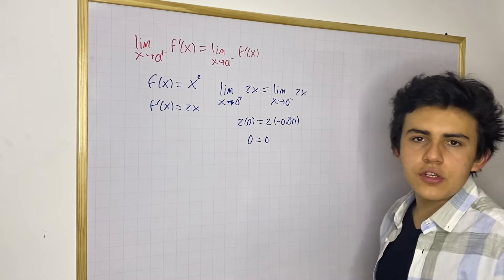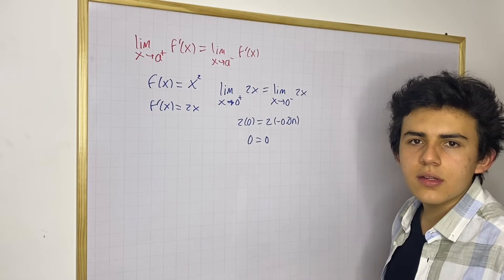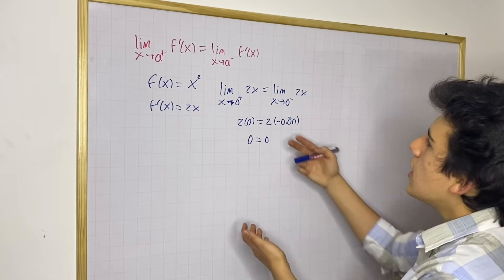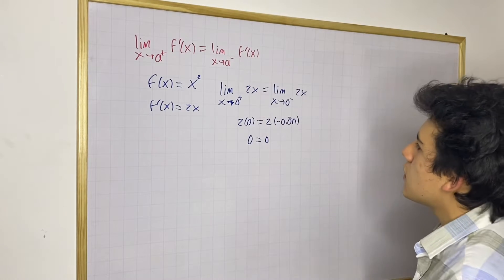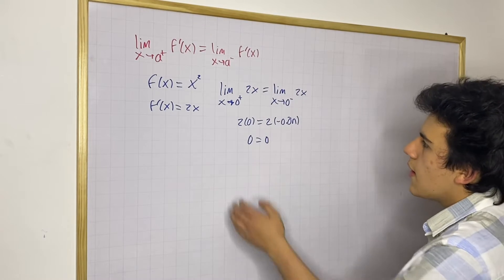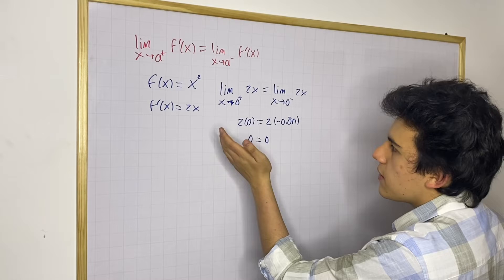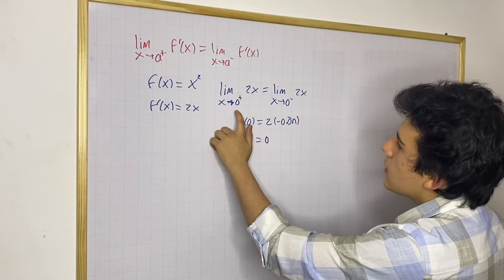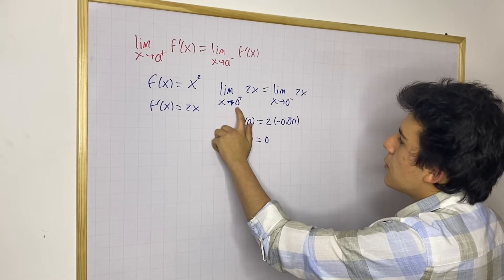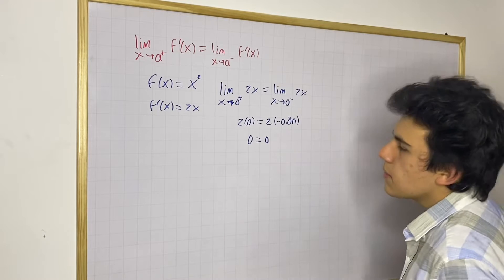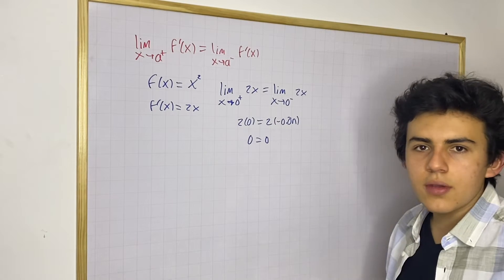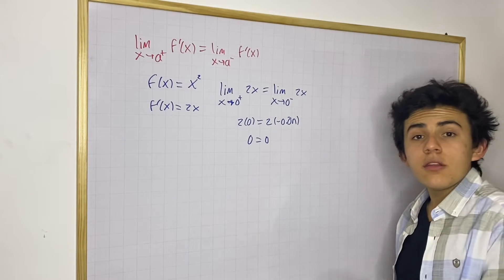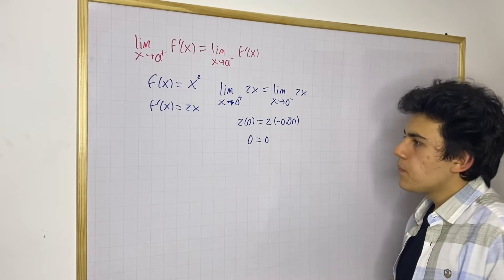This is a differentiable function. If you want to see if a function is differentiable, simply use the definition for differentiability. You choose the value you want to test — in this case we tested x equals 0 — and you find the limit. Whatever you get, that tells you. Now, what is a function that might not be differentiable at some points?